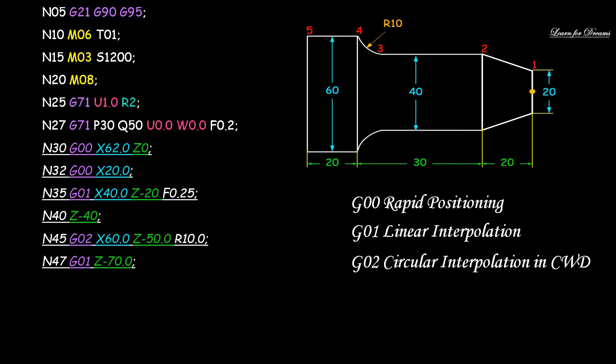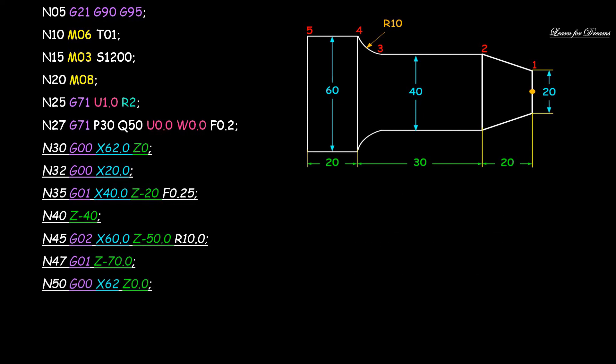Then N47 G01 Z minus 70. This is point number 5. So the last line for canned cycle is N50 G00 X62 Z0. This point from which the canned cycle started, X62 Z0, on that same point it will end.